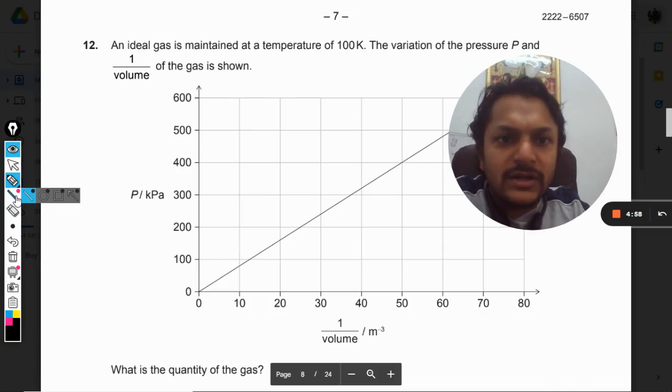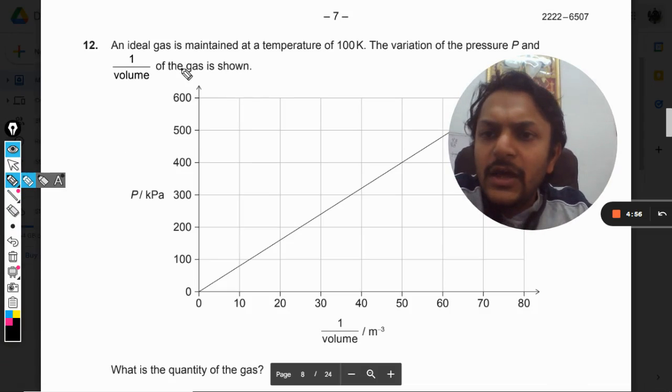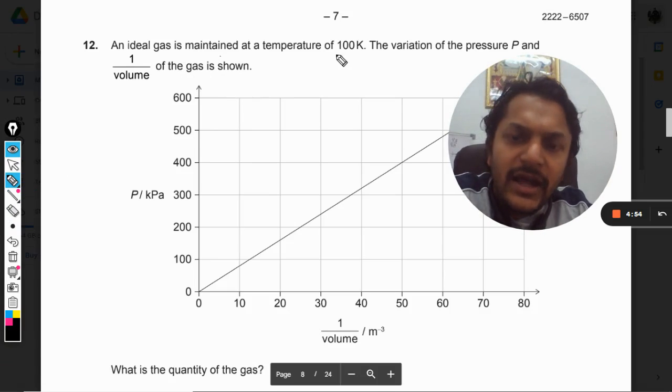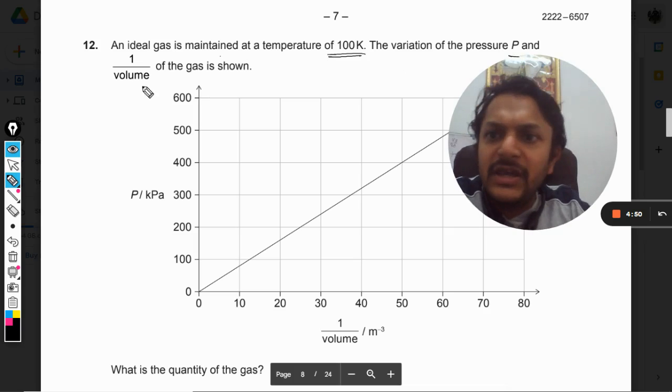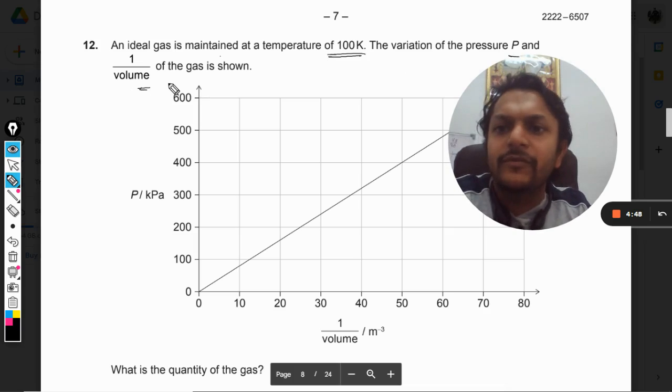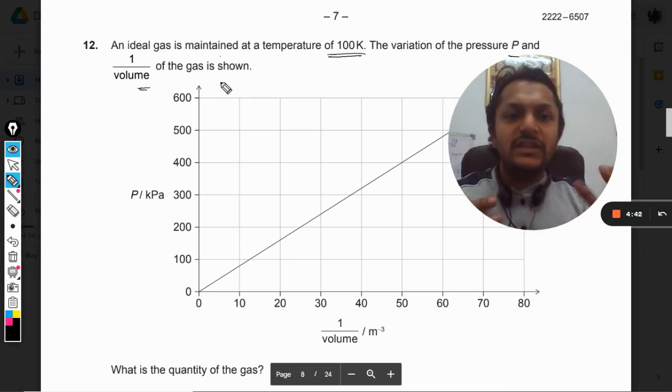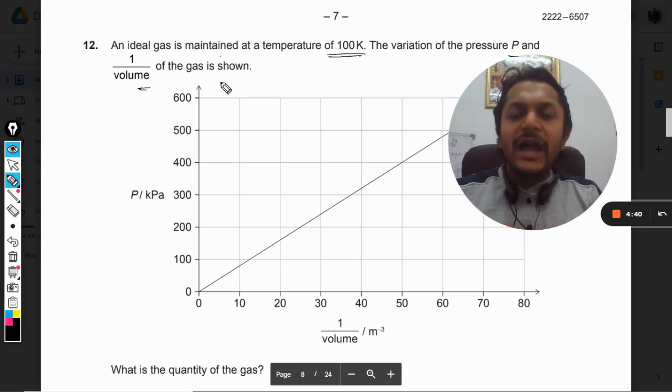Okay students, let's see what is in this question. An ideal gas is maintained at a temperature of 100 Kelvin. The variation of pressure P and the reciprocal of the volume of the gas is shown. The graph is not between P and V; the graph is between P and 1/V.